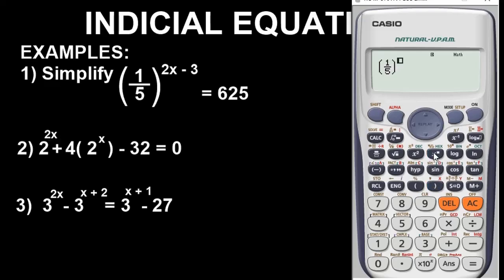Close the bracket. The power is 2x — press Alpha X — minus 3. Now come down. To write the equal sign and bring out the equation, you press Alpha and the equals key as your command. Then enter 625.